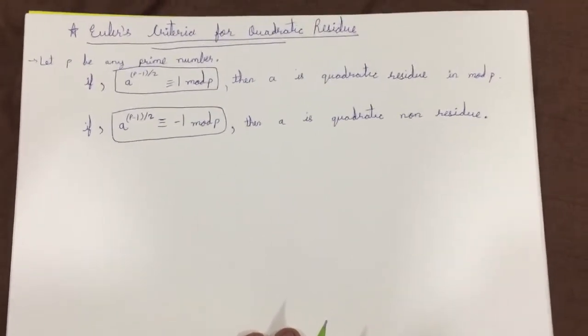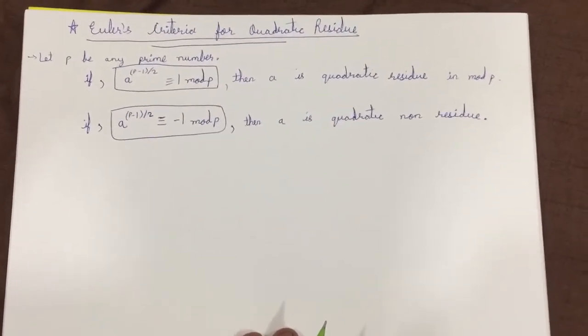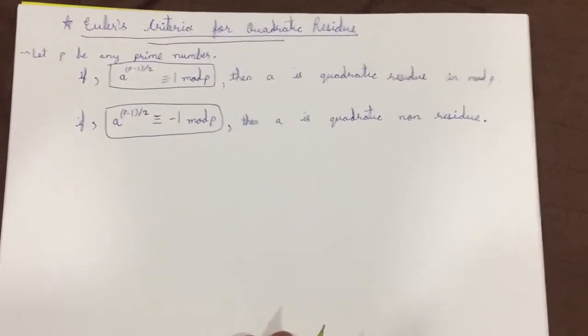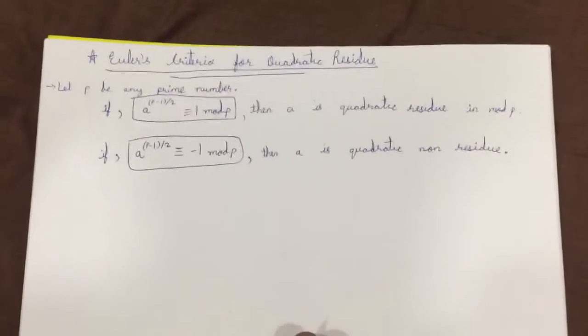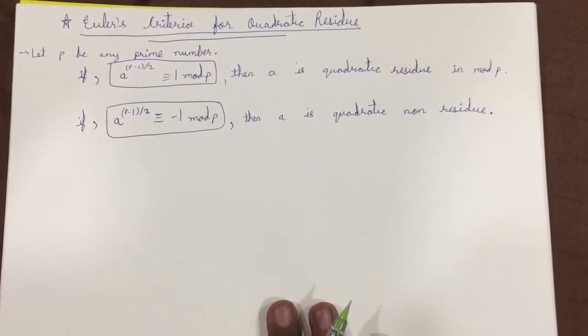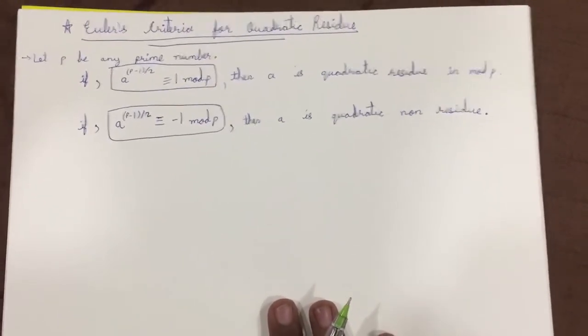Hello friends, in this lecture we are going to learn about Euler's criteria for quadratic residue. In the previous lecture we saw the basic method used for quadratic residue. This is proposed by Euler so it is called Euler's criteria for quadratic residue.